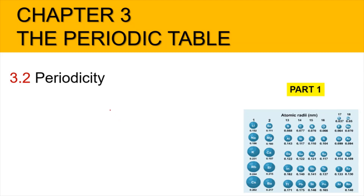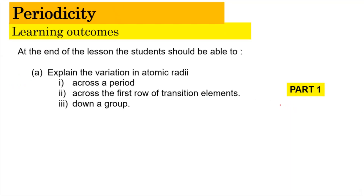Hi, Assalamualaikum and a very good morning. So now we are in chapter 3, the periodic table, and we're going to focus on subtopic 3.2 periodicity, part 1 of the video. In this video, we're going to learn how to explain the variation in atomic radii across a period, across the first row of the transition elements, and down the group. So without further ado, let's start.